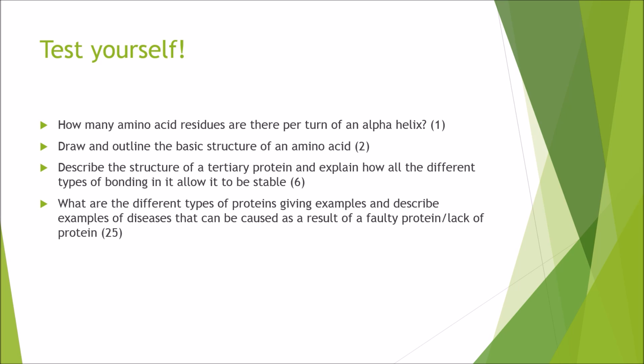Here's the test yourself section. I'm going to give you a question. I'm not going to give you the mark scheme so let's see what answers you come up with. First of all, how many amino acid residues are there per turn of an alpha helix for one mark. For two marks draw and outline the basic structure of an amino acid. For six marks describe the structure of a tertiary protein and explain how all the different types of bonding in it allow it to be stable. Then finally an essay style question for 25 marks. What are the different types of proteins giving examples and describe examples of disease that can be caused as a result of a faulty protein or a lack of protein.